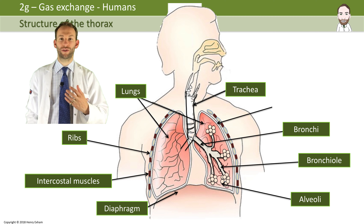It works by changing the air pressure inside your chest cavity — your thorax. If you lower the air pressure, more air will move in to equalize the pressure. If you increase the air pressure, it forces air out automatically. You change the pressure by changing the volume inside your thorax, which will either lower or increase the pressure.